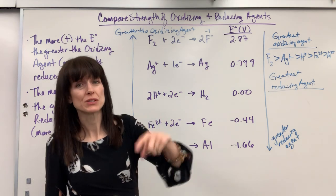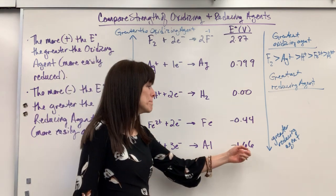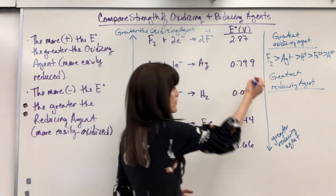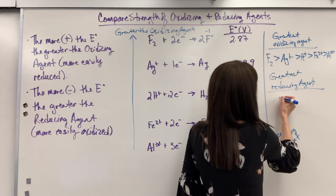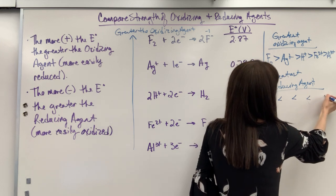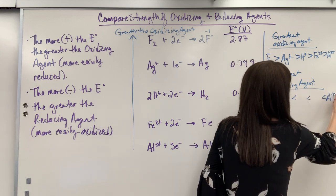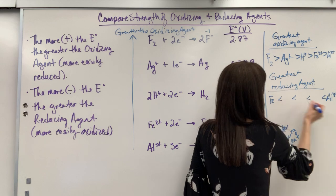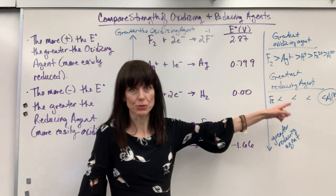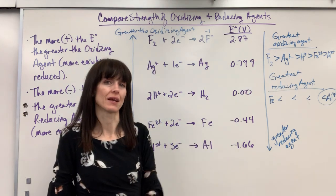So, the greatest reducing agent is just the most negative to the least negative. So, I would just change my inequalities here. Fluorine is less than silver, which is less than hydrogen, less than iron, less than aluminum. So, your aluminum right there, that is going to be the greatest reducing agent, because it's the most negative.